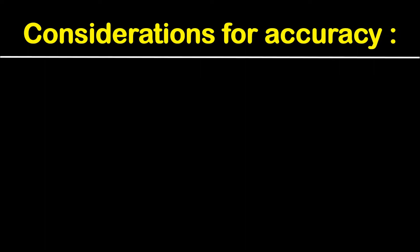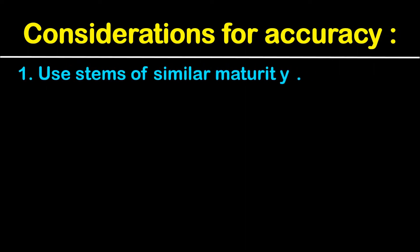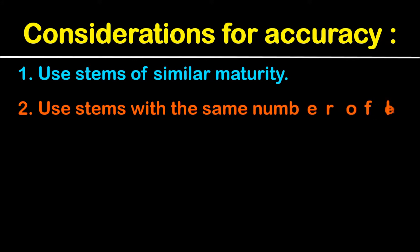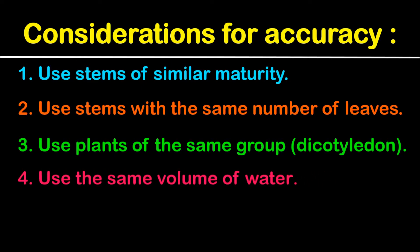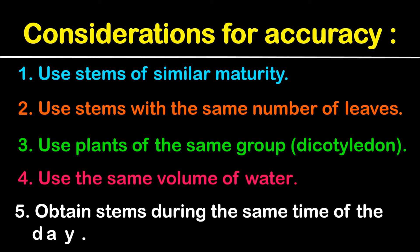Considerations for accuracy include: use stems of similar maturity, use stems with the same number of leaves, use plants of the same group such as dicotyledons, use the same volume of water, and obtain stems during the same time of day.